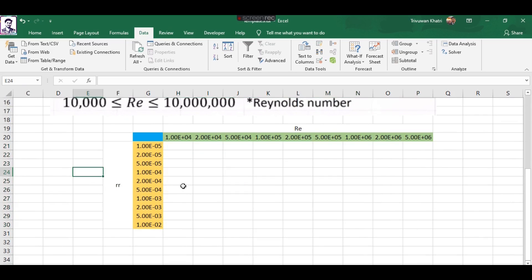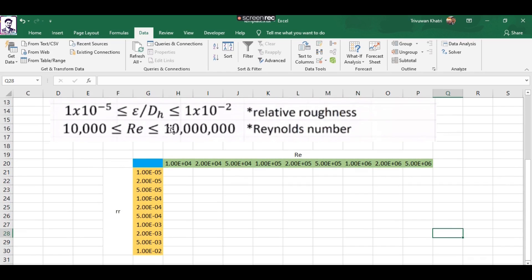This table is the baseline for the Moody chart diagram, which is the diagram that engineers use to deal with problems in flow dynamics. Now let's populate this table between the Reynolds number and relative roughness.